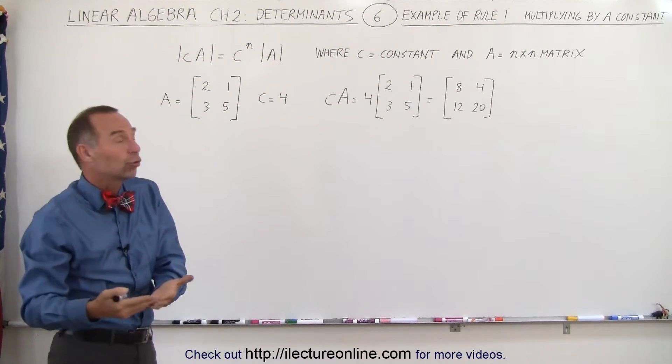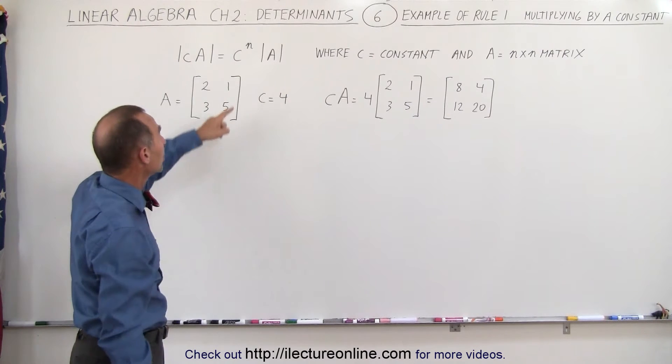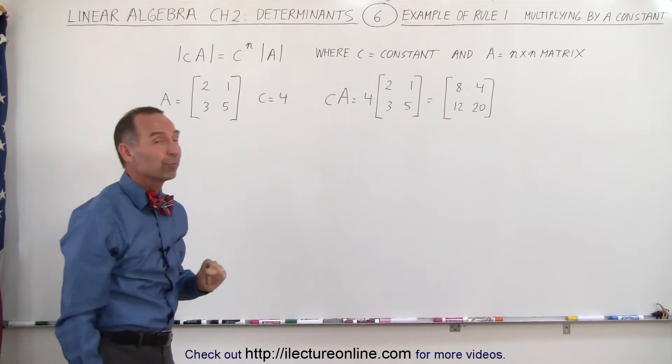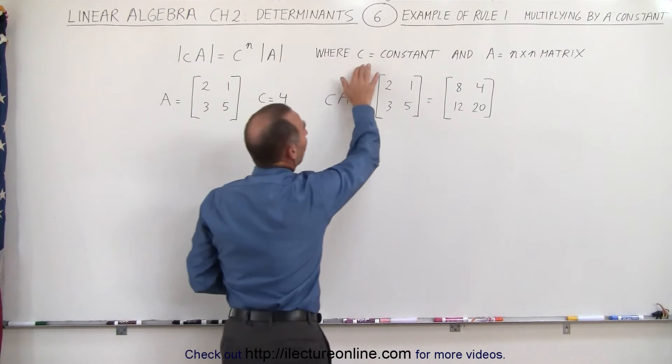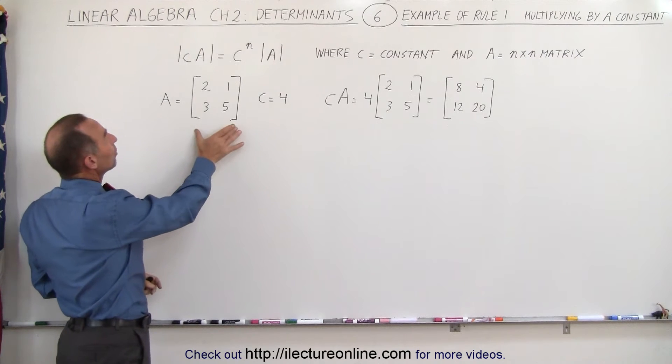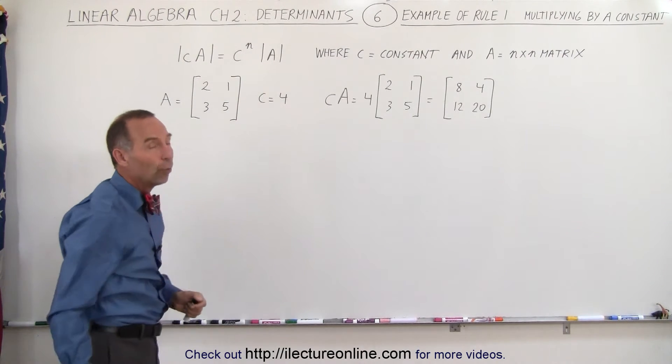If it's a 2 by 2 then n is 2, if it's a 3 by 3 then n is 3, multiplied times the determinant of matrix A. So here we define C and we define A. Let's say that A is simply the 2 by 2 matrix as given here and C is the constant 4.